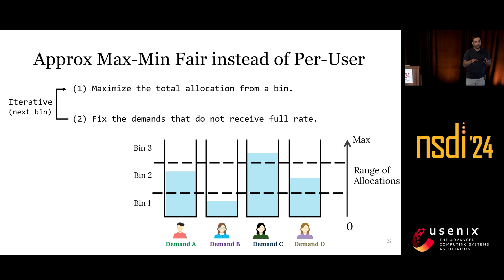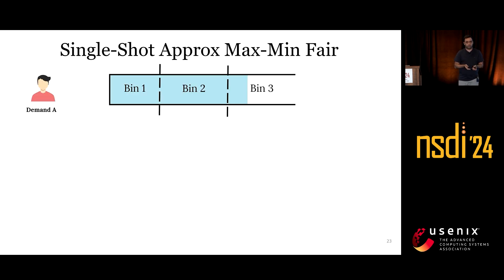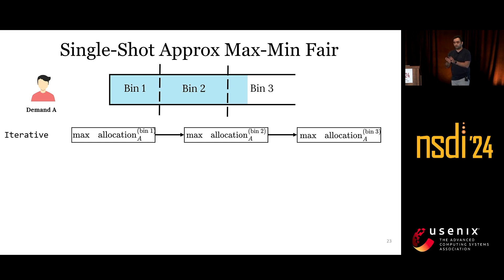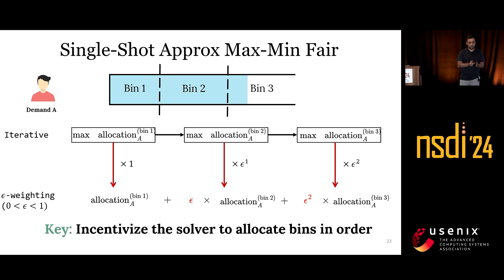The pseudocode: we maximize total allocation from a bin, fix demands that don't receive the full rate, and move on to the next bin with remaining demands. Again, the goal is to translate this iterative process into a single fast optimization, and we use epsilon weighting. For one demand that can take allocation from multiple bins, an iterative approach would first maximize from bin one, then bin two, then bin three. With epsilon weighting, we assign lower weight to bins appearing later in the sequence, incentivizing the solver to follow the same order.